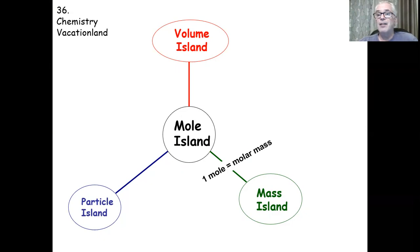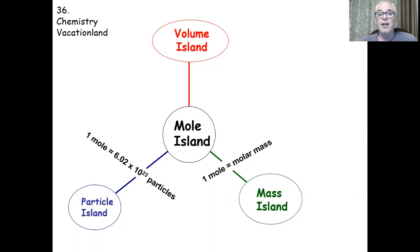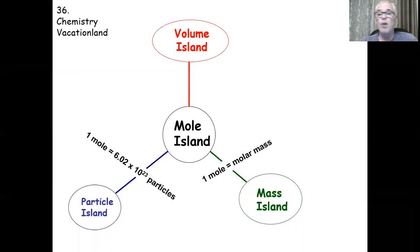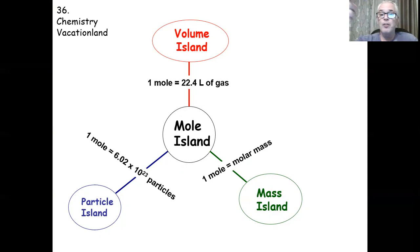Being chemists, we put up audio toll booths — the kids had to say something smart to cross each bridge. To go from Mole Island to Mass Island, you say: one mole is equal to the molar mass of an element or compound. To go from Mole Island to Particle Island, you say: one mole is equal to Avogadro's number of particles — 6.02 times 10 to the 23rd atoms. To go from Mole Island to Volume Island, you say: one mole is equal to 22.4 liters of any gas at standard temperature and pressure. These tolls are really conversion factors.